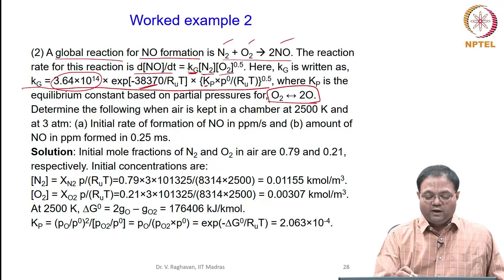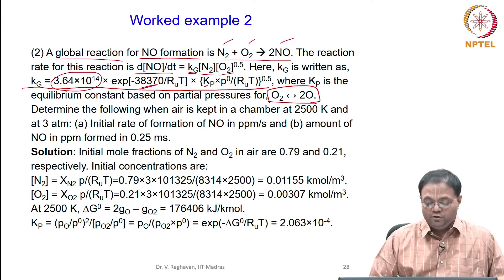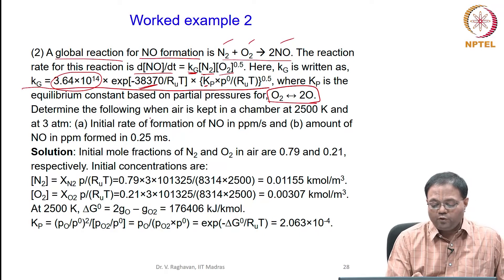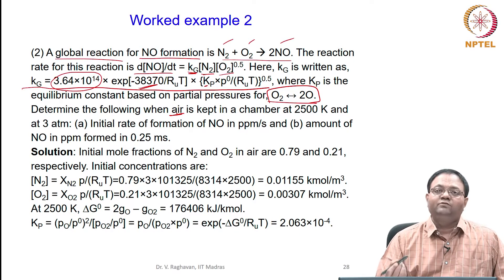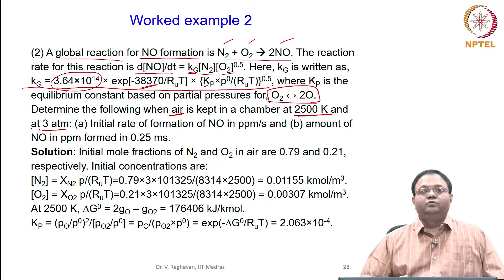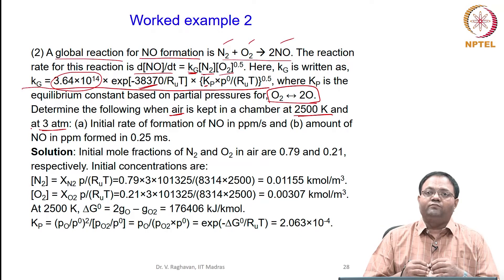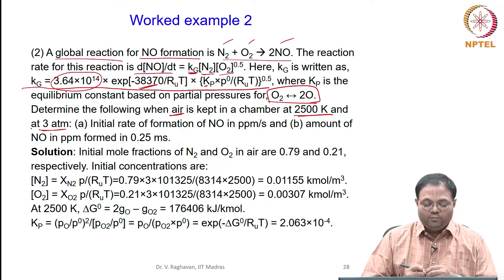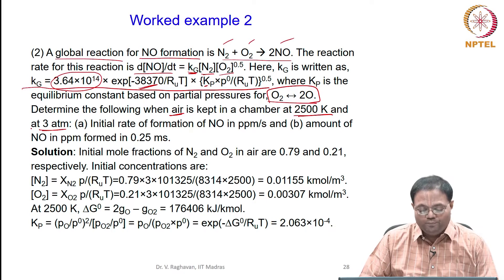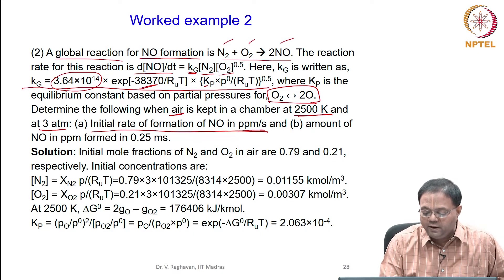The expression also contains Kp (atmospheric pressure / RuT) to the power 0.5. Using this, we can find Kg at any temperature and hence compute the reaction rate. The question asked is: determine the initial rate of formation of NO in ppm per second when air is kept in a chamber at 2500 K and 3 atmospheric pressure.